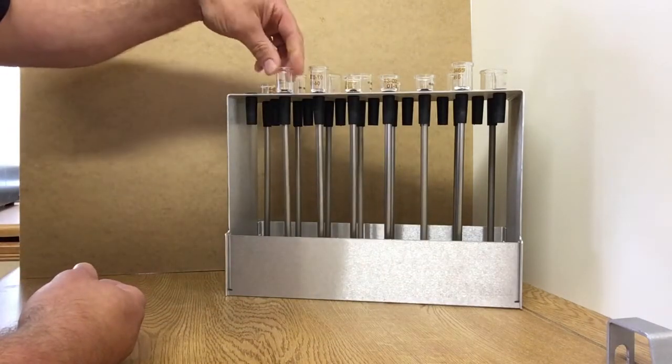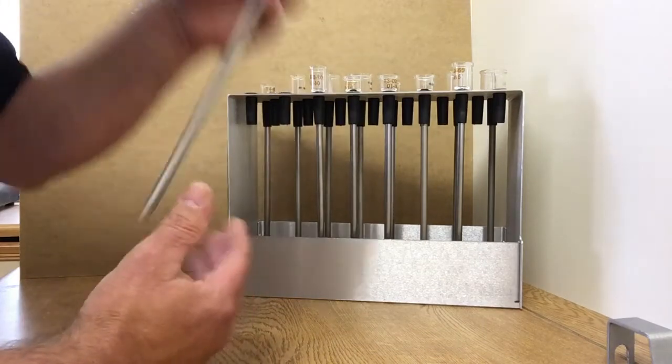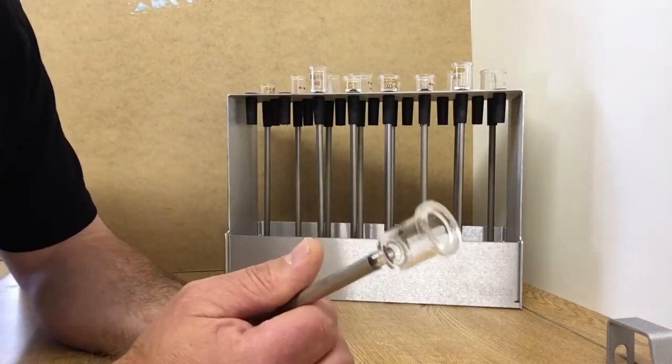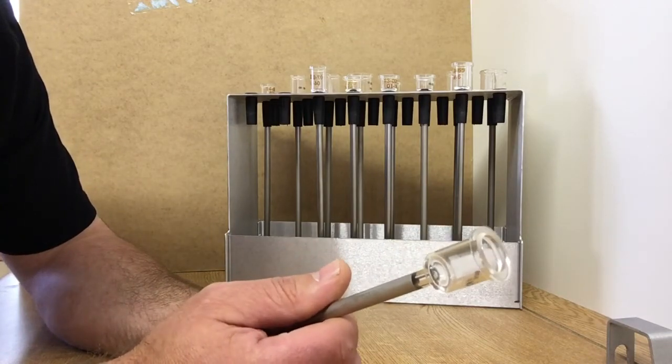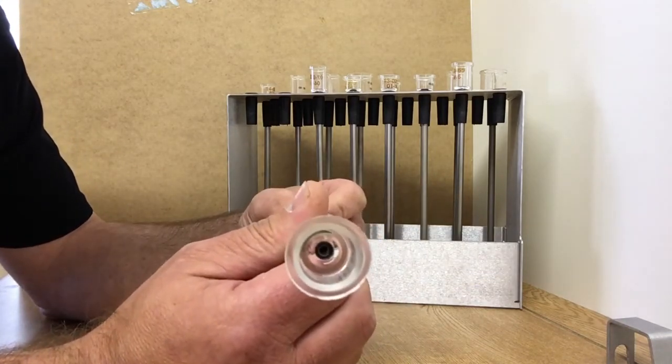We already know that this particular penetrometer is the ideal one to use for this sample of chalk. It has a 5cc bulb and a 1.8 milliliter stem.